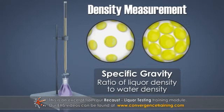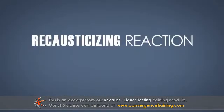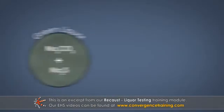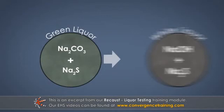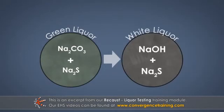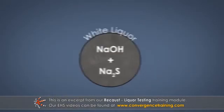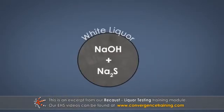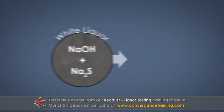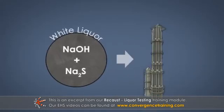These tests monitor the recausticizing reaction, or the conversion of green liquor to white liquor. The concentration of cooking chemicals in white liquor is used to determine the flow of white liquor sent to, or charged to, the digesters.